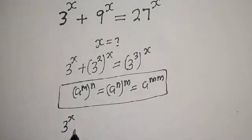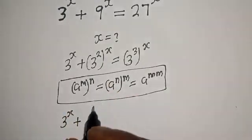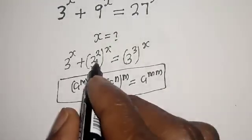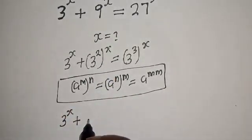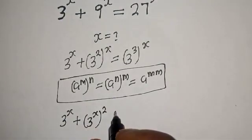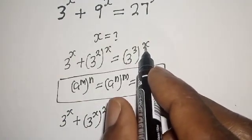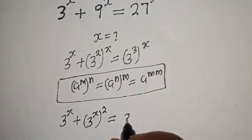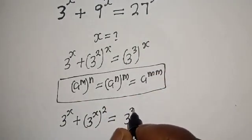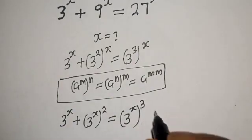So 3 raised to power x plus 3 squared raised to power s can be written as 3 raised to power 2s, and 27 equals 3 raised to power 3. The right side, 3 raised to power 3, can be written as 3 raised to power s, raised to power 3.